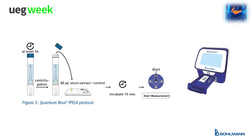Pancreatic elastase is quantified in extracts of human stool samples. Figure 1 shows the complete protocol of the assay. After the stool extraction with the Bowman-CalixCAP device and centrifugation step, 80 microliters of the stool extracts are applied directly to the test cassette.